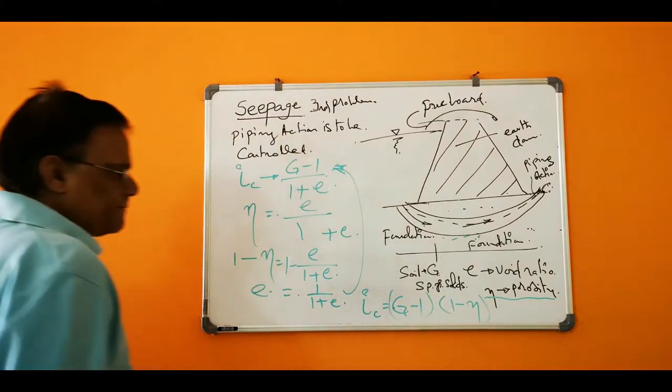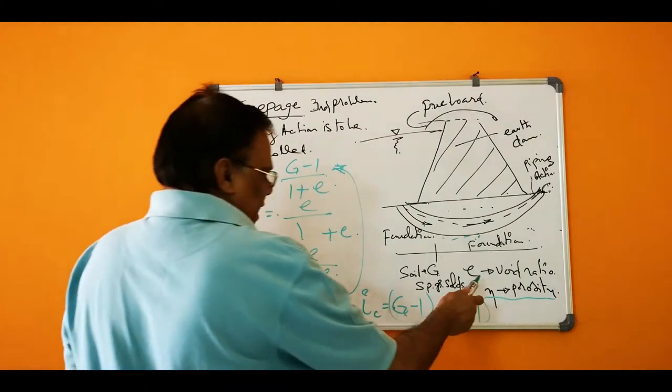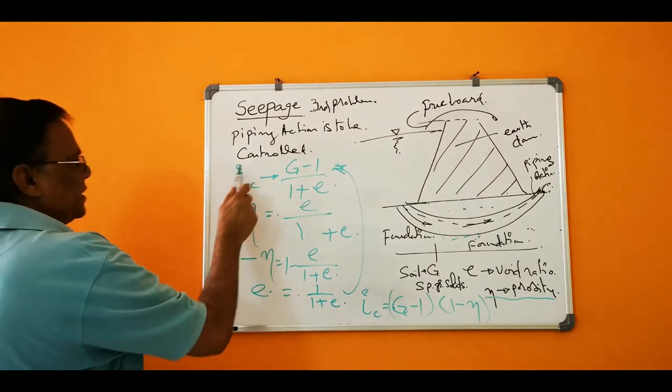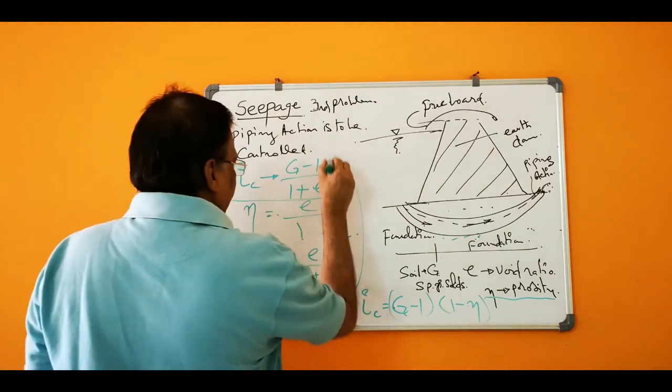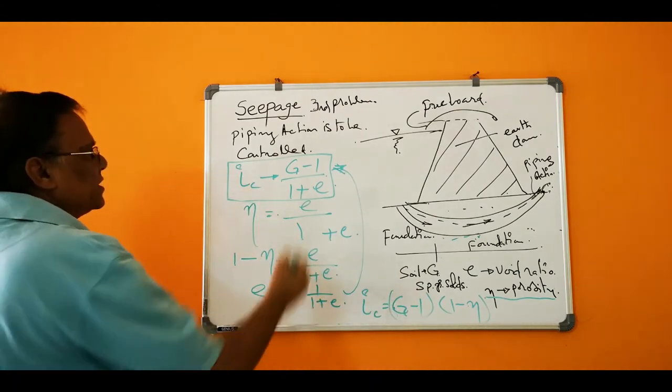This becomes I critical is equal to G minus 1 into 1 minus N. So if this is the porosity, this is the G of solids, and here is the void ratio, then this is the definition it is given, this is the derivation, and you can convert into this derivation.